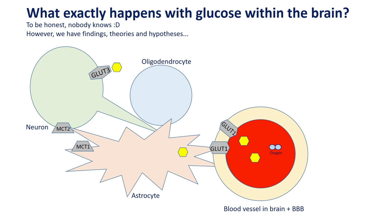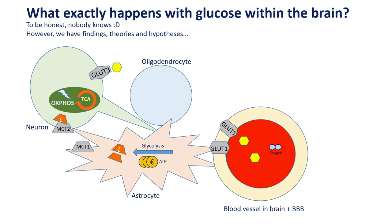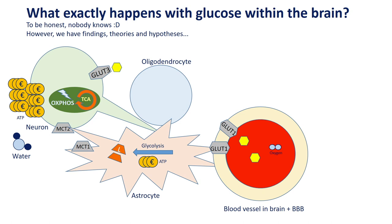Glucose from blood is taken up by astrocytes, goes through glycolysis, the pyruvate is converted into lactate, and lactate is then transported to the neuron. Within the neuron, it is converted back to pyruvate, taken up by mitochondria, and driven through the TCA cycle and oxidative phosphorylation. However, since that time, there are many other experimental data showing that it is not so clear whether this really happens in brain tissue.